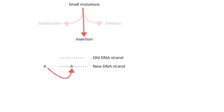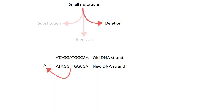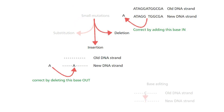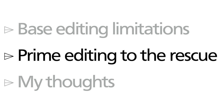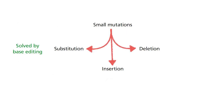Insertion mutations occur when nucleotides that are not supposed to be present are added into the DNA sequence during replication. When a deletion mutation occurs, nucleotides that are present are removed by random chance during replication. In both situations, base editing will not help. This is where prime editing comes in, to solve the remaining small mutations that cannot be solved by base editing.